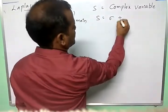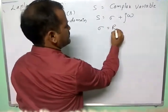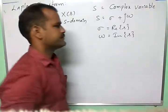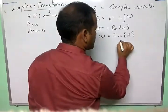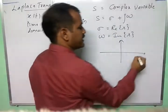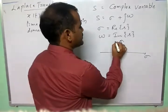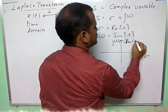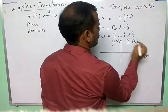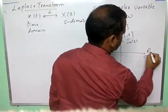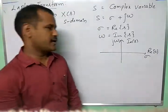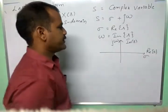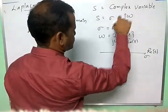S is equal to sigma plus j-omega, where sigma is the real part of S and omega is the imaginary part of S. We represent signals in the S domain by taking the real part of S on the x-axis and the imaginary part of S on the y-axis — this is the S-plane — locating poles and specifying the region of convergence. I will have a detailed discussion about ROC properties in the next video.